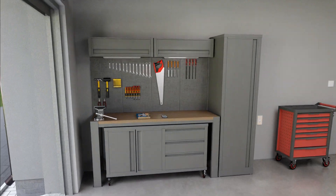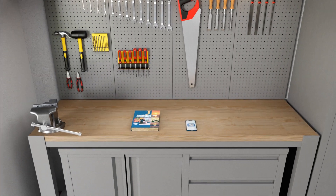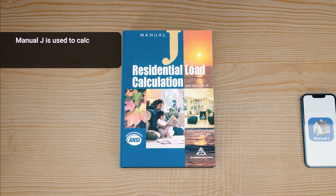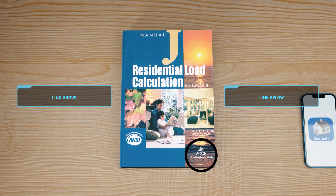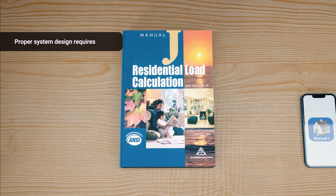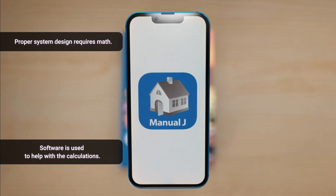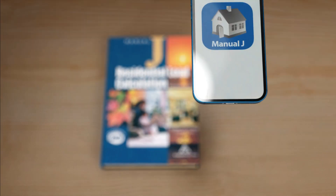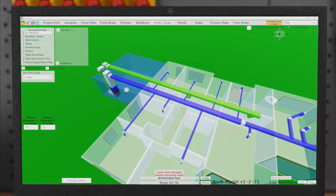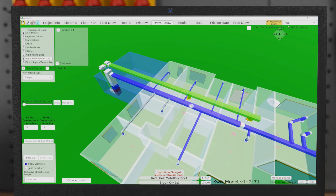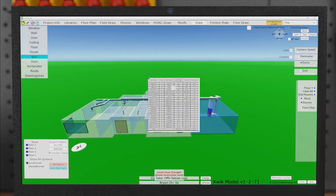In the HVAC trade for residential buildings, we use ACCA Manual J to calculate heat losses and gains in residential structures. Manual J is one of the design manuals from the Air Conditioning Contractors of America, also known as ACCA. Proper system design requires math, and nowadays we use software to help us out with the calculations. But Manual J will let you know which measurements you need to make an accurate load calculation. This video will hopefully help you understand why those measurements are important for calculating indoor heat loads.